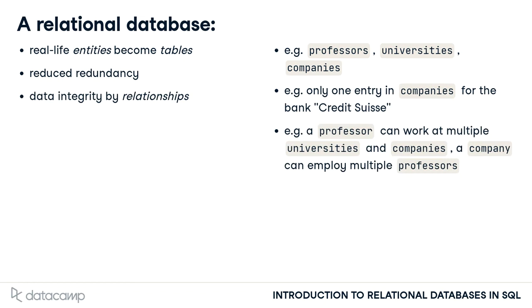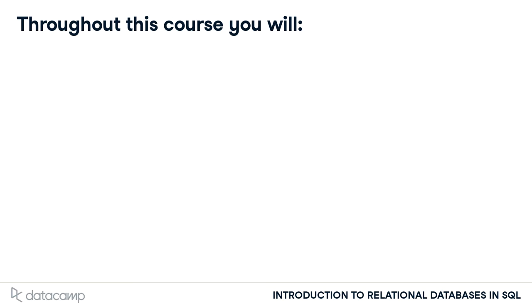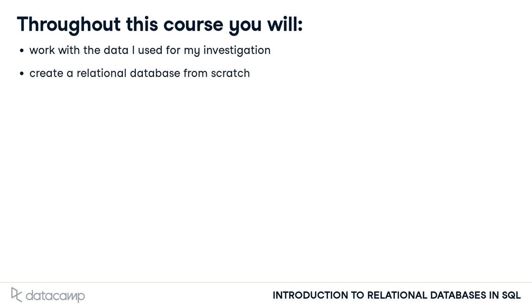You can define exactly how entities relate to each other. For instance, a professor can work at multiple universities and companies, while a company can employ more than one professor. Throughout this course, you will actually work with the same real-life data used during my investigation. You'll start from a single table of data and build a full-blown relational database from it, column by column, table by table.